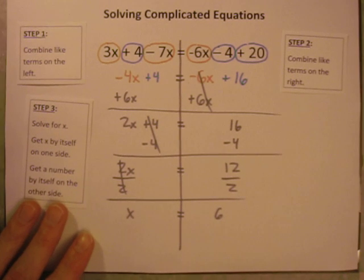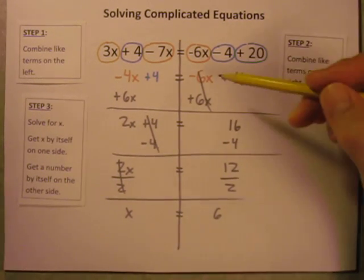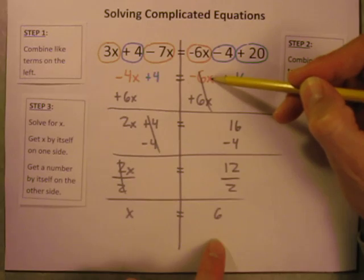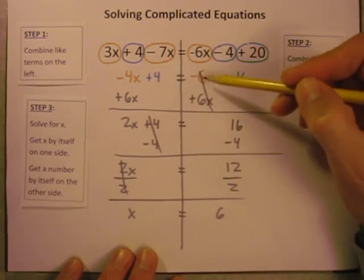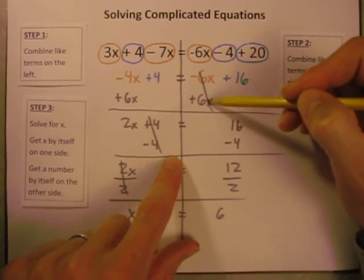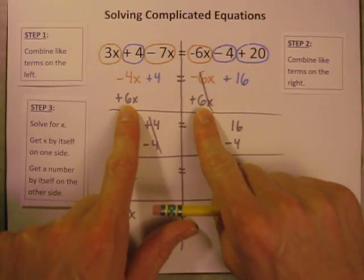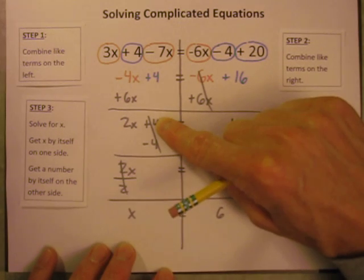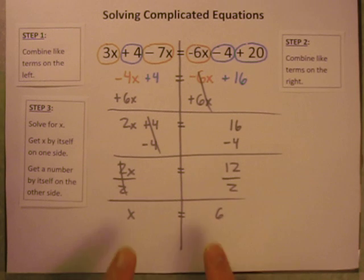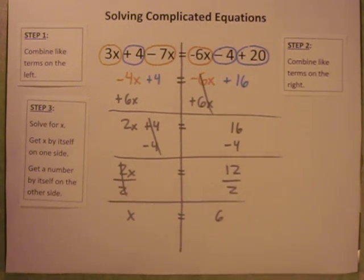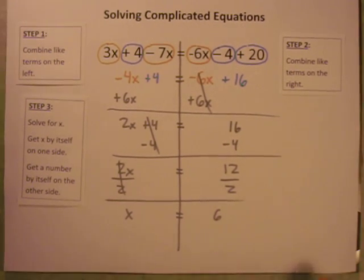So now I have negative 4x plus 4 is equal to negative 6x plus 16. And now we're ready to solve for x. We want to get rid of the x term on the right. Get rid of the numbers on the left. We'll do that by doing the opposite. And the opposite of minus 6x is plus 6x. And I can do that to both sides. Get rid of the plus 4. Get rid of the divide by 2. And you should end up with x is equal to 6. So hopefully that makes sense. Hopefully that will help you out. And you will have success doing these more complicated equations.